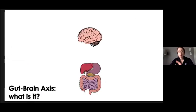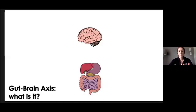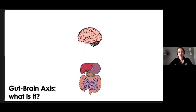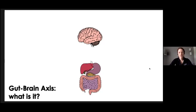The gut-brain axis is the bidirectional neurohumoral communication system between the GI tract and the central nervous system. It makes sense that our central nervous system and enteric nervous system are so connected because they share a common embryologic origin — neural crest cells develop into our brain and spinal cord, but also migrate to create the enteric ganglia and smooth muscle cells of our visceral organs. We see this connection in the overlap of neurotransmitters: we use dopamine agonists to treat Parkinson's, but also dopamine antagonists like metoclopramide to augment gut motility in gastroparesis.